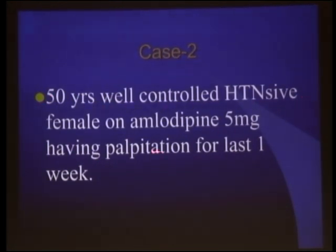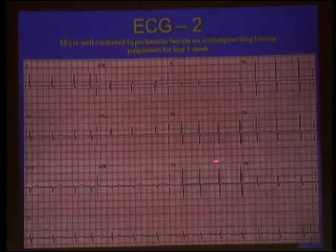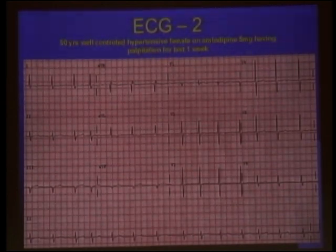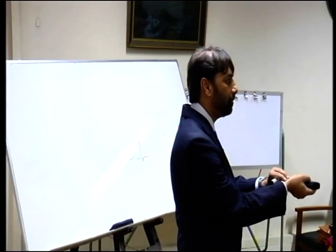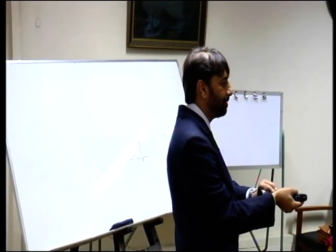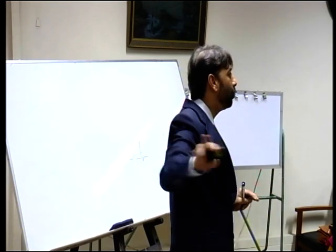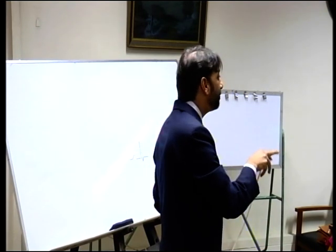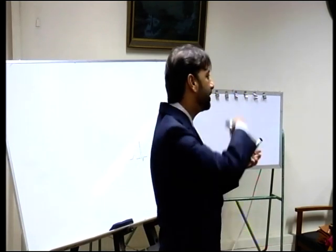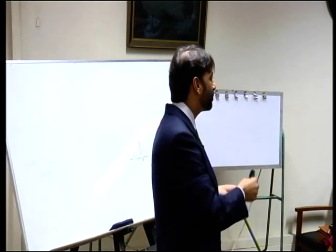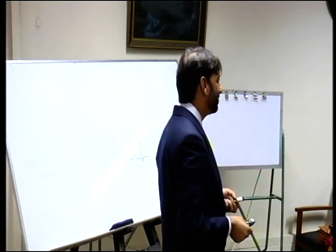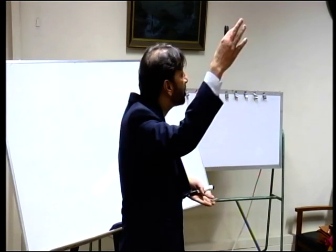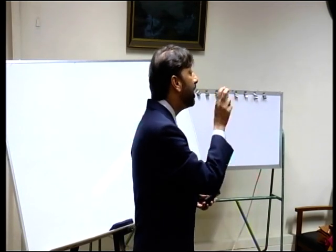50-year-old, well-controlled hypertensive on amlodipine, one week of palpitation. Further workup revealed: diabetic also, and Q waves in lead 3 and AVF. So your clue from the irregular pulse leads you to the patient's history, and from the ECG — Q waves in inferior leads. Further workup: old inferior asymptomatic MI, now AF. Management was completely transformed — otherwise she would have left with just a lexotanil for palpitation. This is how ECG transforms patient status if you know how to utilize it.